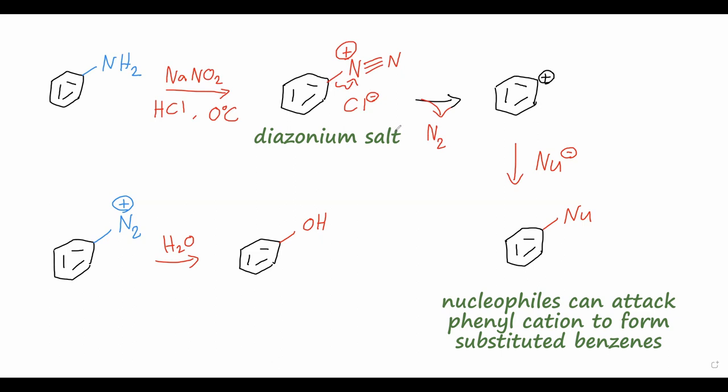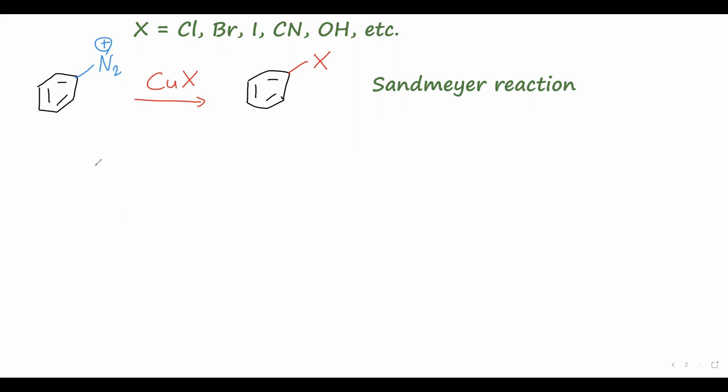Another very useful reaction starts with the same diazonium salt, and then we treat this with a copper-1 salt. So I can write CuX, where X is commonly a halide like chloride or bromide or iodide, but can also be other counter-ions like cyanide or even hydroxide. And this will form the substituted benzene ring, so we get that N2 leaving the ring, and we will have the substituted benzene with the X group on that ring. This is known as the Sandmeyer reaction whenever we're using that copper-1 salt.